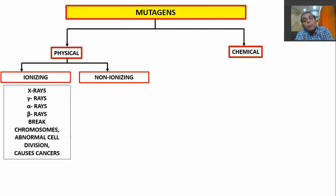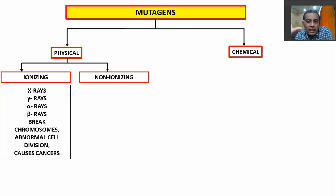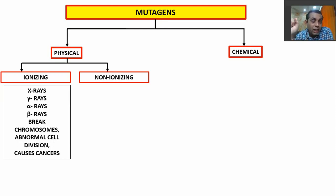About ionizing radiations — you have studied in physics that their wavelength is very low, but their energy is much more. Because of this very low wavelength and very high energy, they can break our chromosomes and break the bonds of our DNA.